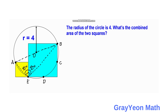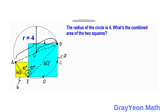Next, we label the sides of the squares: the side of the blue square as A and the side of the yellow square as B. The diagonal of the yellow square would be B times root 2, and the diagonal of the blue square would be A times root 2. These diagonals are the legs of the larger right triangle ABE. Since the radius is 4, the diameter is 8, and this diameter is the hypotenuse of triangle ABE.